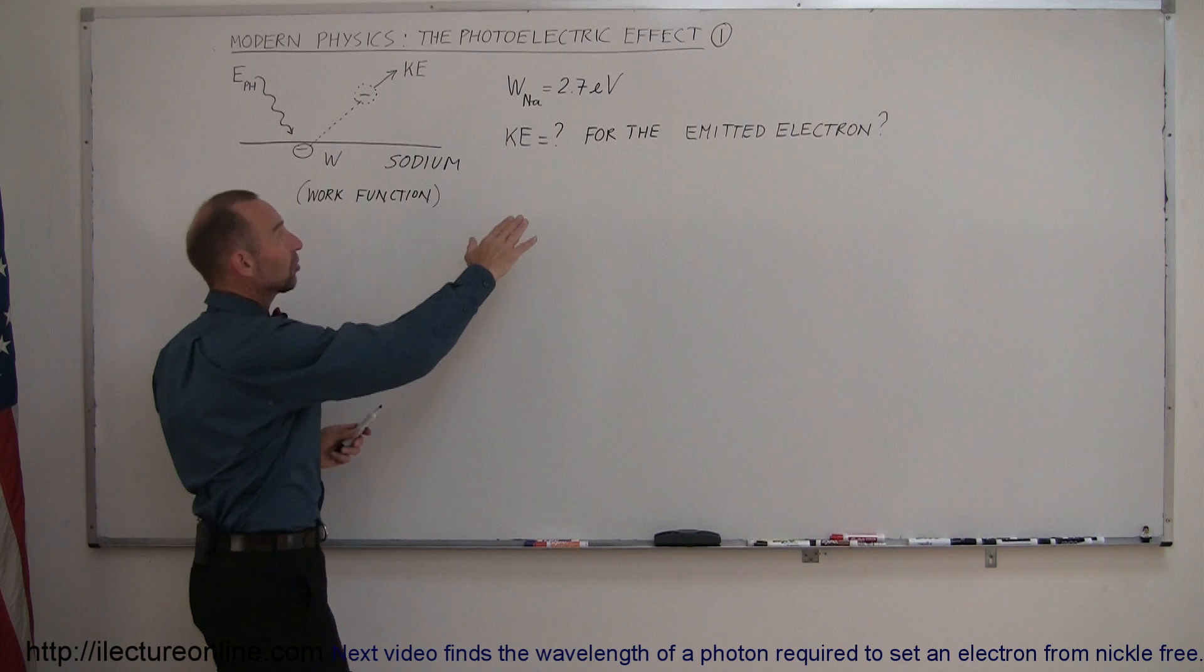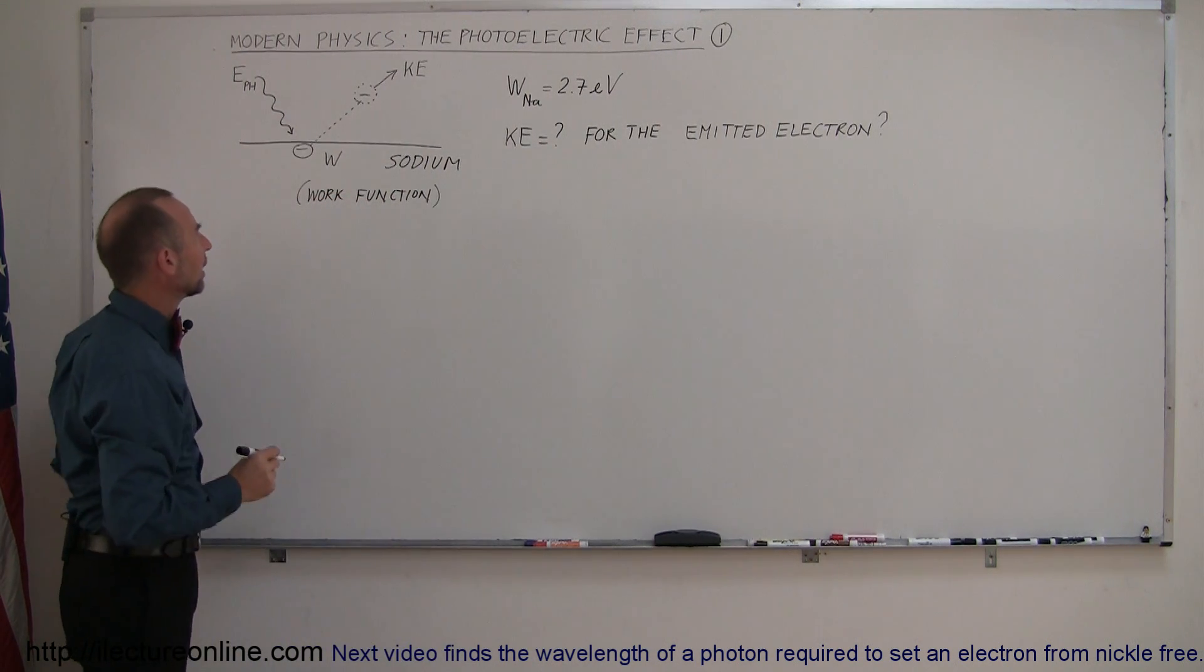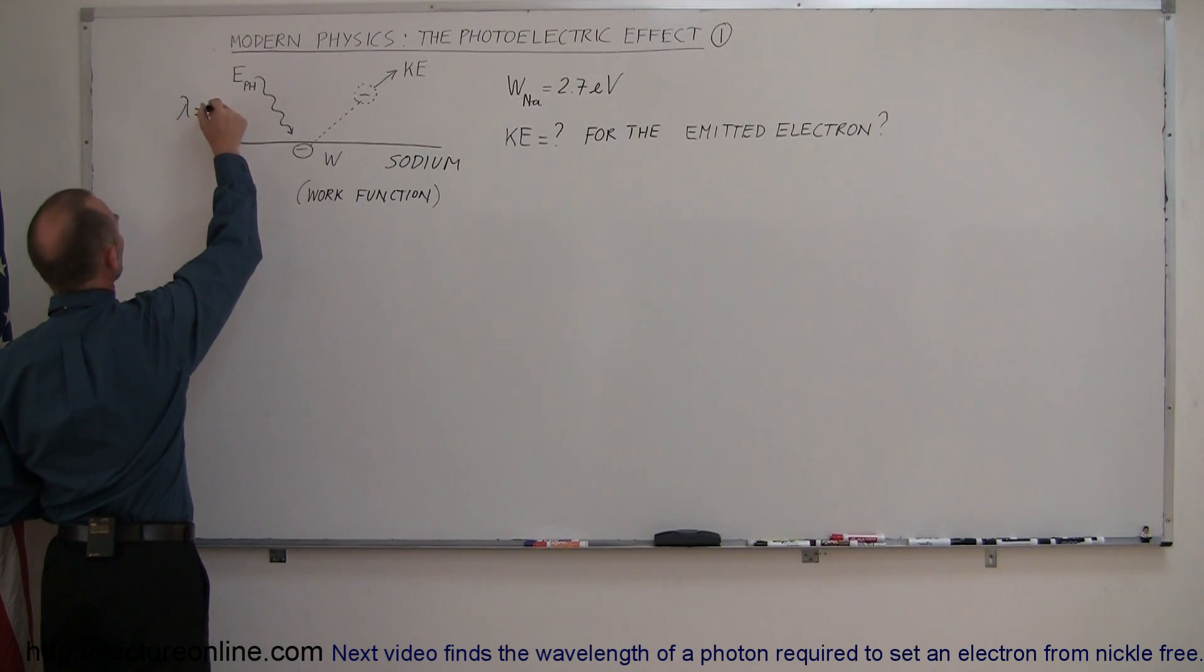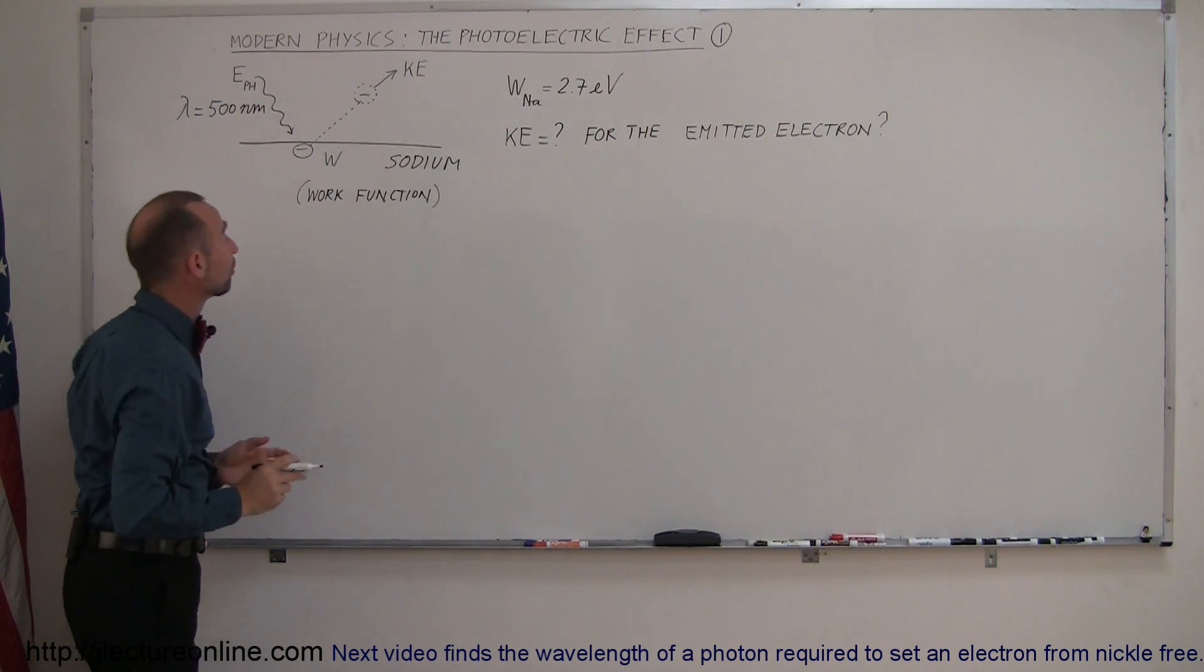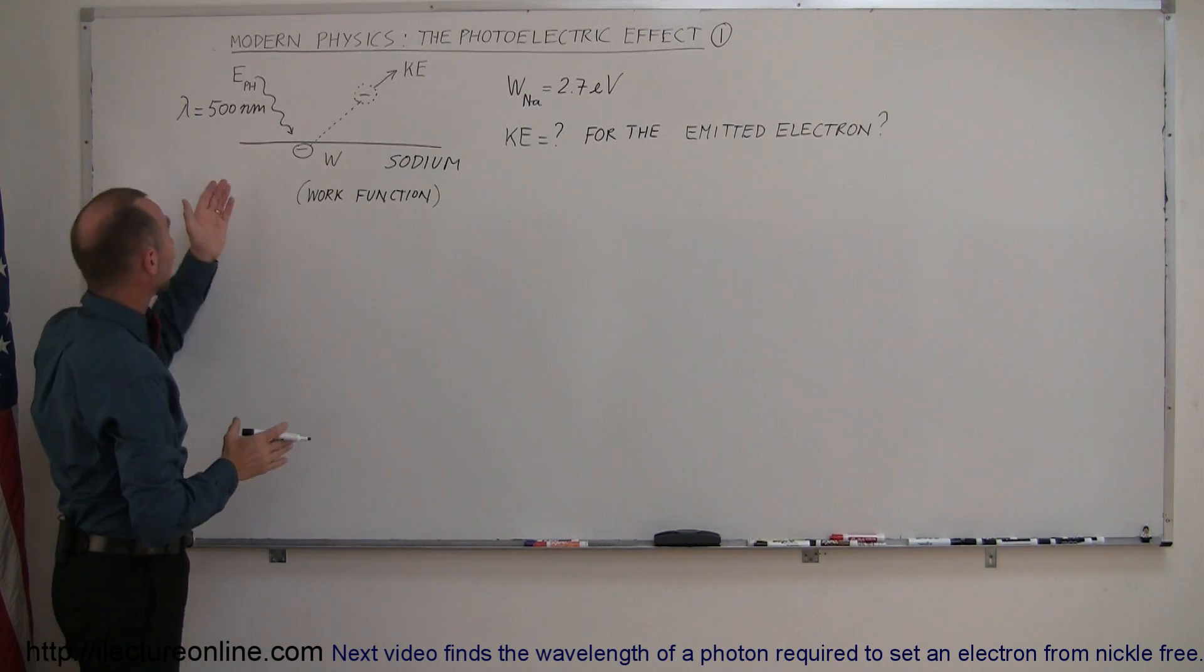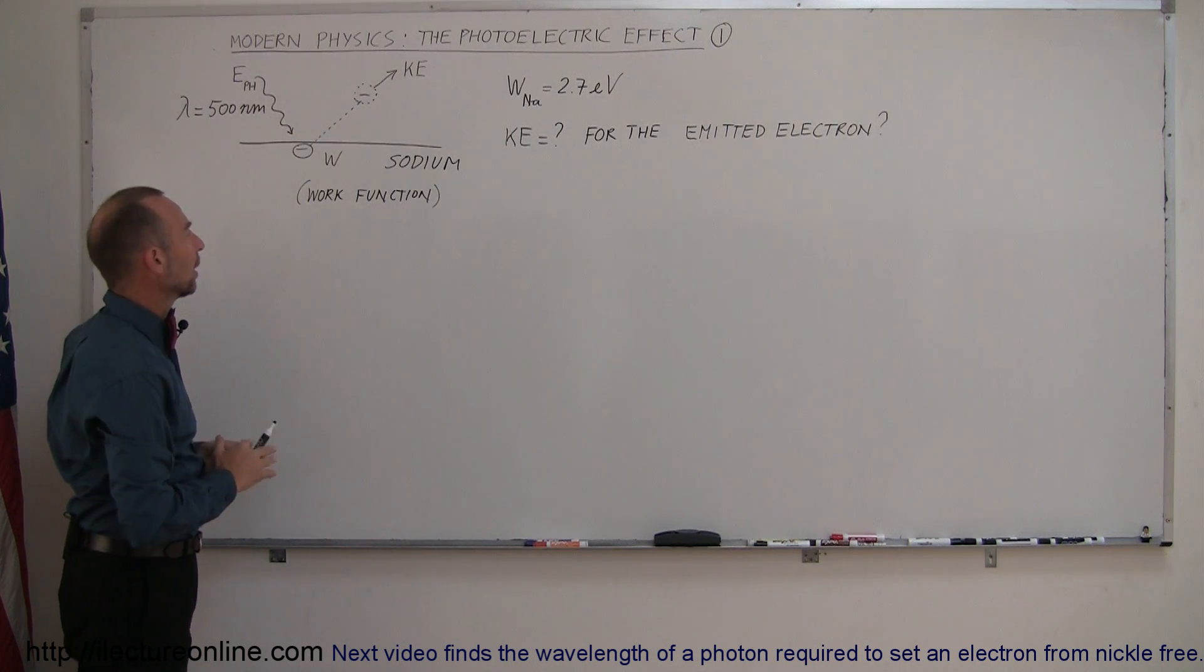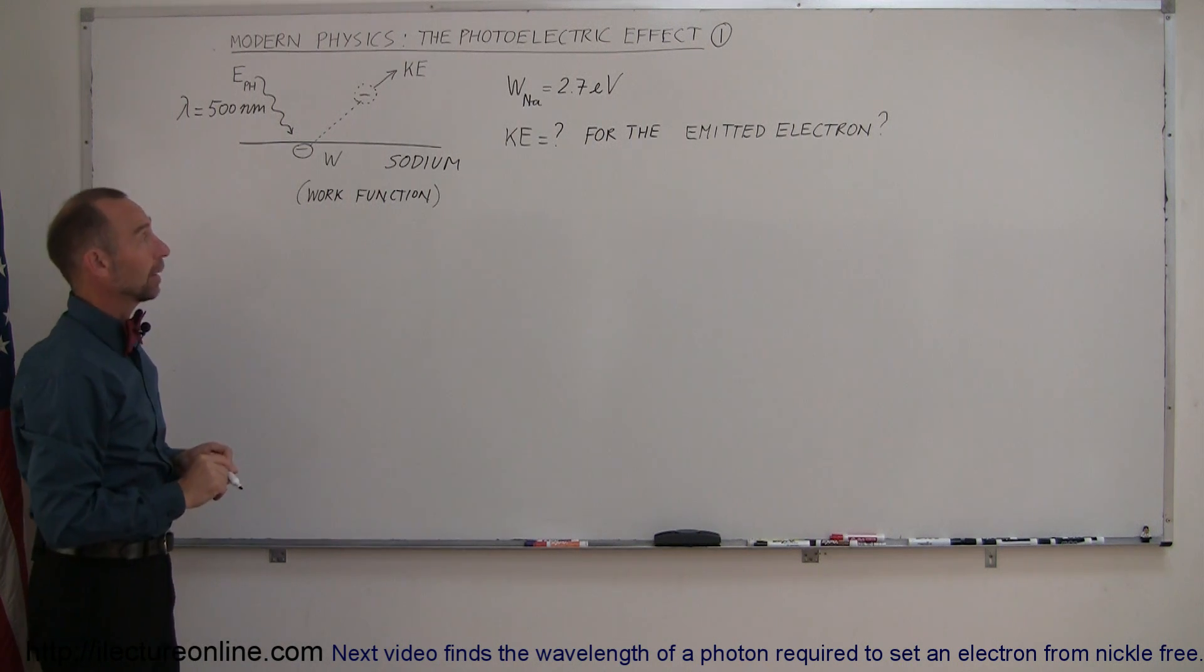So the question then is, how much kinetic energy will the electron have when a photon comes in? Now, let's say we have a photon coming in with a wavelength lambda equal to 500 nanometers. Will the electron, first of all, will that have enough energy to make the electron escape the sodium metal? And is there any leftover for the electron to have some kinetic energy?